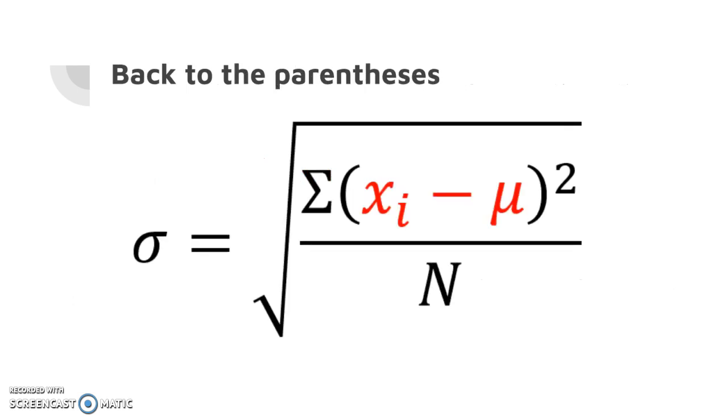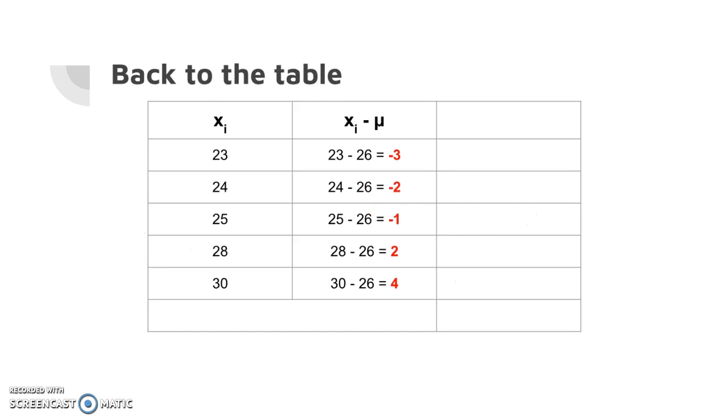So with that in mind, order of operations, back to the parentheses. We need to take each individual data point and we need to subtract 26. That's what the table is for. Rather than try to just write it wherever, let's put it in an organized fashion. We're going to take 23 minus 26, 24 minus 26, 25 minus 26, so on and so forth. And that's going to give us a number. The numbers in red there are what is important. Now pause if you need to.